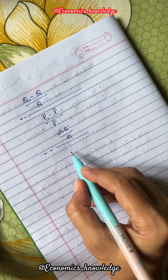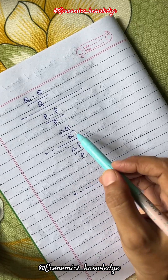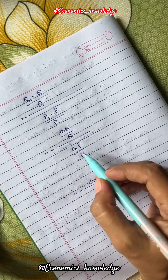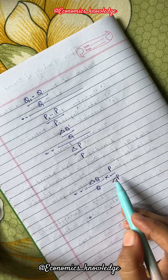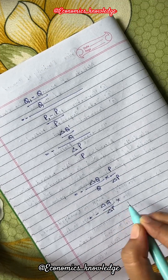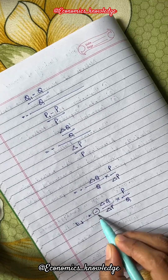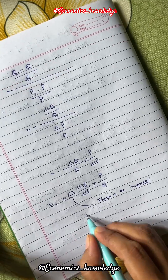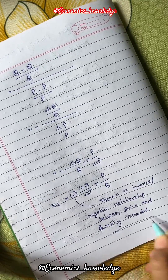Q1 minus Q can be written as delta Q, and P1 minus P can be written as delta P. We can now write this in multiplication form: Ed equals minus delta Q upon Q into P upon delta P. This formula can also be written as Ed equals minus delta Q upon delta P into P by Q. The minus sign indicates an inverse or negative relationship between price and quantity demanded.